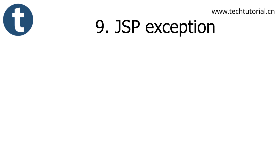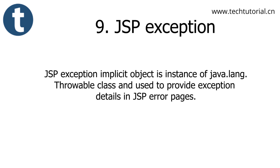The JSP exception object is an instance of java.lang.Throwable class and is used to provide exception details in a JSP error page. This was already shown in a previous video — it is used for defining the error page and printing the error in the stack trace. You can check the previous tutorial for details.